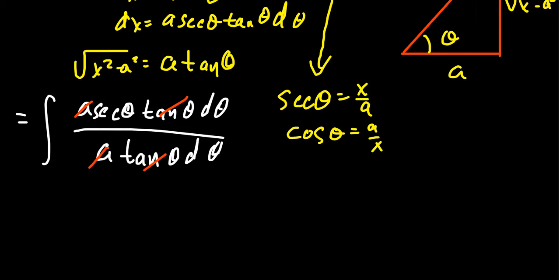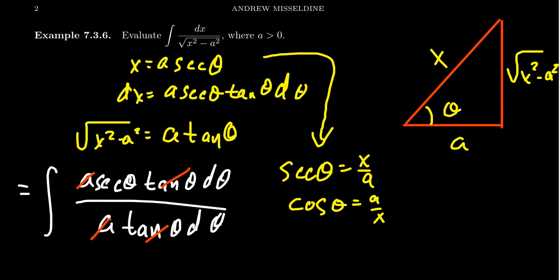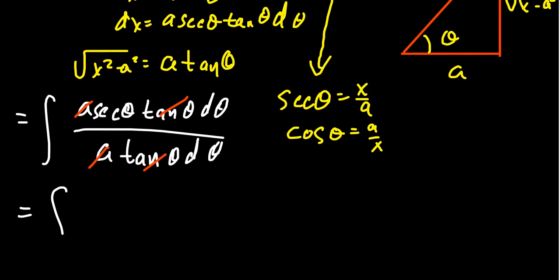And so this just becomes, give myself a little bit more space here. Oh, what happened? Come back here on the right slide. We get the integral of secant theta d theta. That's all that we have to do.